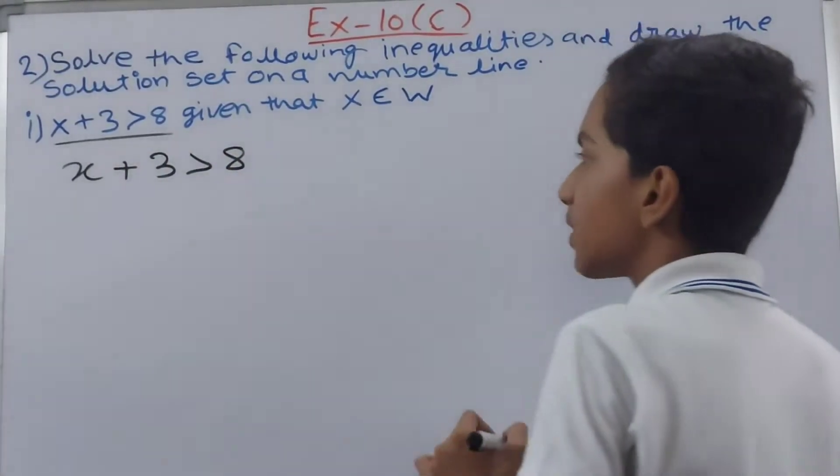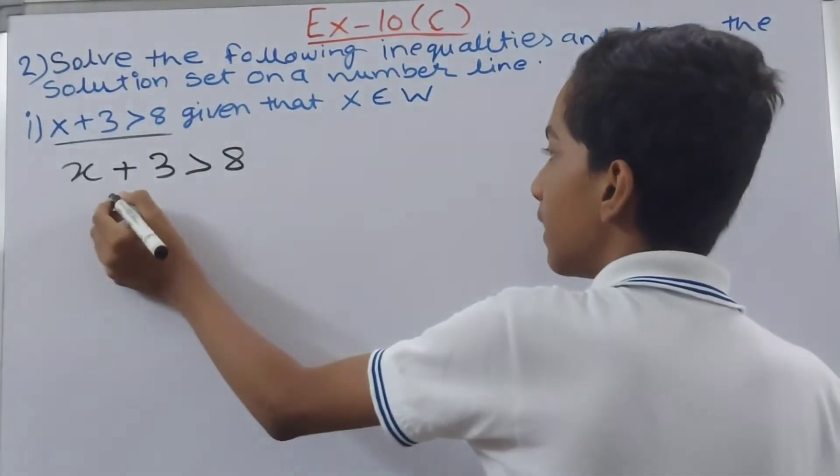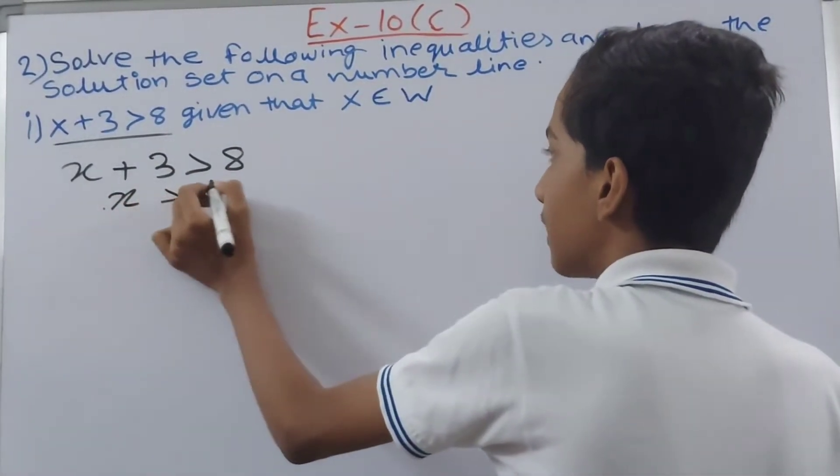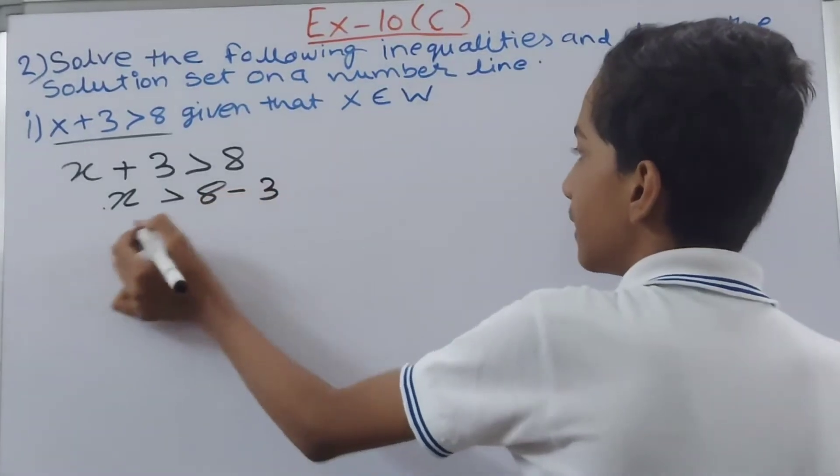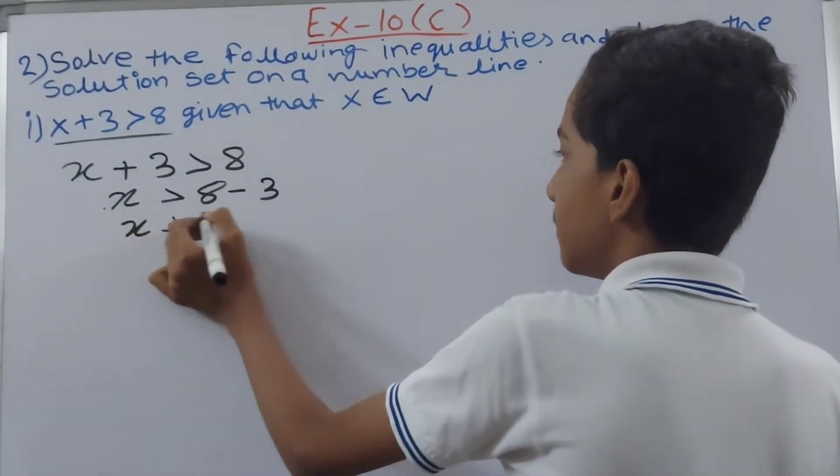Alright, this is our inequality. So this plus 3 will come to this side. So we have x is greater than 8 minus 3. So x is greater than 5.